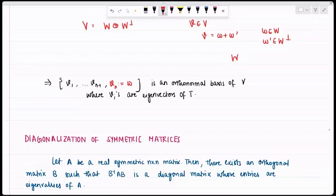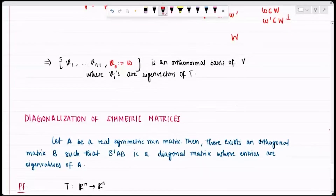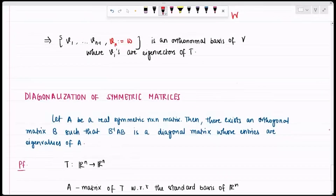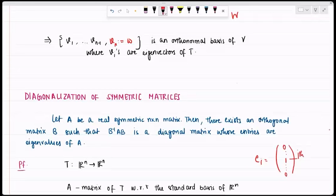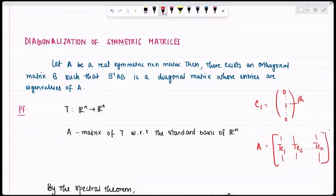This is a corollary of the Spectral Theorem. I describe a symmetric linear map T from ℝⁿ to ℝⁿ, and bring in A as the matrix of T with respect to the standard basis of ℝⁿ. The standard basis consists of all e_i where every entry is 0 except the i-th. My matrix A has column vectors T(e₁), T(e₂), …, T(e_n), so T acting on any element equals A acting on that element.